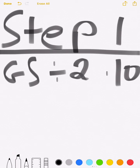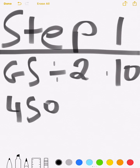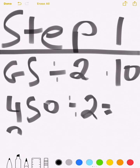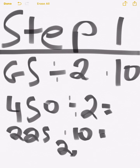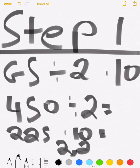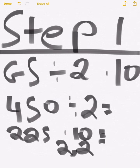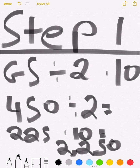For example, suppose your ground speed is 450 knots. You're going to divide that by 2, which equals 225. Times that by 10, which equals 2,250 feet per minute.